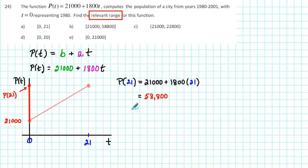Therefore, from 1980 to 2001, the population ranged from 21,000 up to 58,800. The relevant range is the interval from 21,000 to 58,800. The correct answer is B.